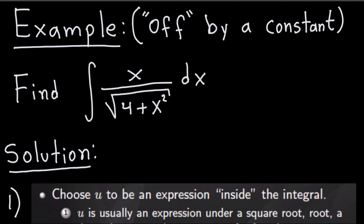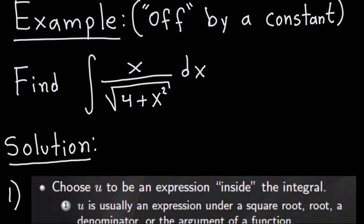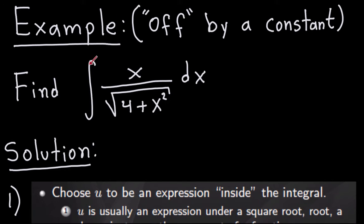Hello and welcome to another video on integration techniques. We'll continue with examples that are off by a constant. Remember what that means is when we make the substitution and we choose u to be something inside this integral, the du or the derivative is inside the integral but is off by a constant. That's not a problem because we can always fix that by doing some division. So let's go ahead and compute this integral, which is going to be one of those cases off by a constant.